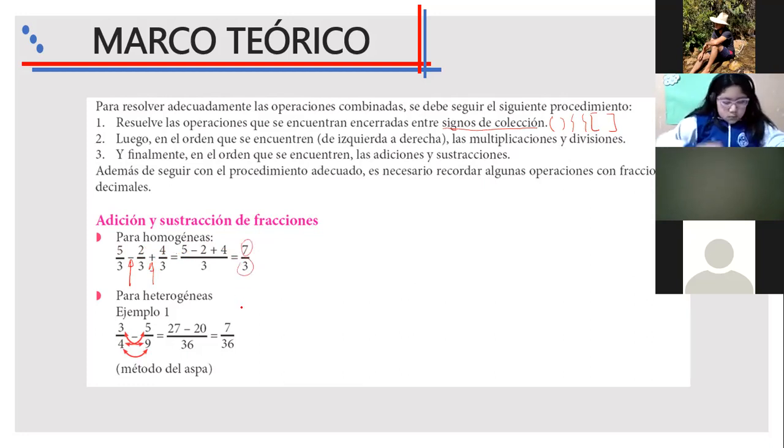Con respecto a las fracciones heterogéneas, tendríamos que multiplicar en aspita. Sería 3 por 9 me da el 27, y luego el 4 por 5 me daría el 20, con el signo acá negativo. En el denominador tendríamos el producto de 4 por 9, vendría a ser 36. Operamos, 27 menos 20, y vendría a darnos 7 treinta y seisavos. Bien, este es el método del ASPA.